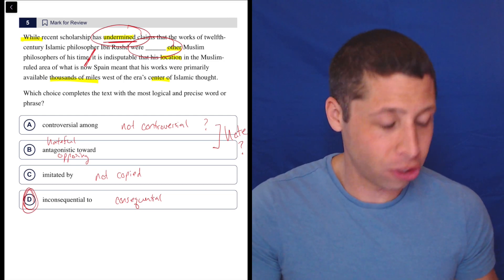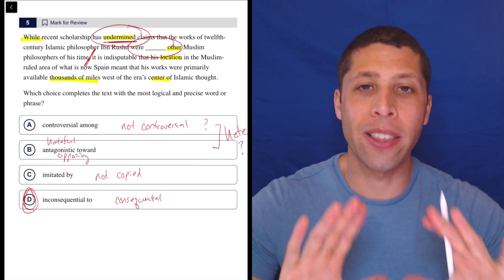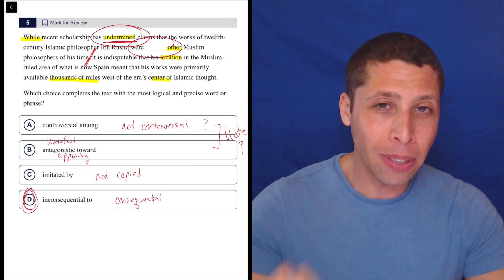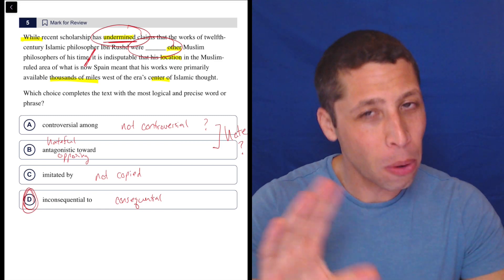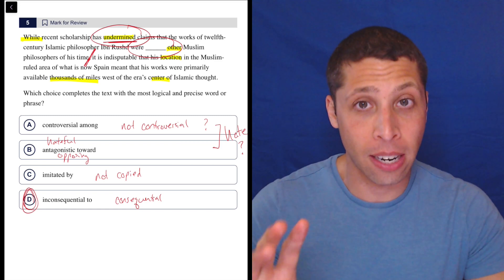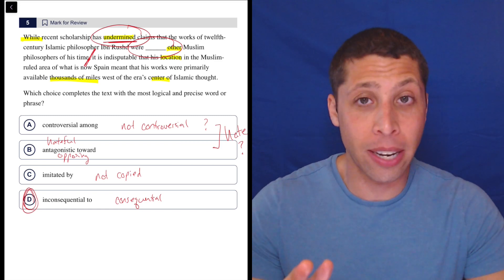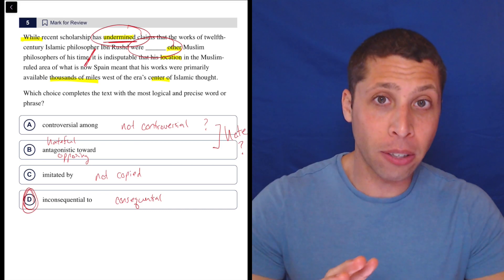It's basically saying that even though Ibn Rushd lived far away, he was not inconsequential to these other people. So I'm even using a double negative in there. So even though he's far away, he still is consequential. So I think the best way to understand these answer choices is to recognize that we are undermining the blank. So we do want to kind of flip it to try to understand the logic of the sentence better.